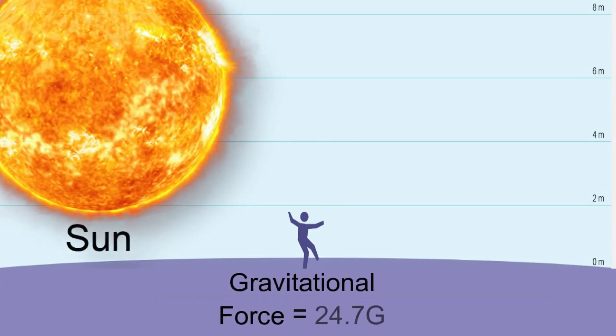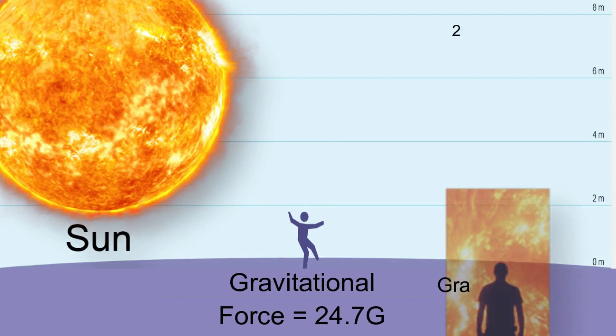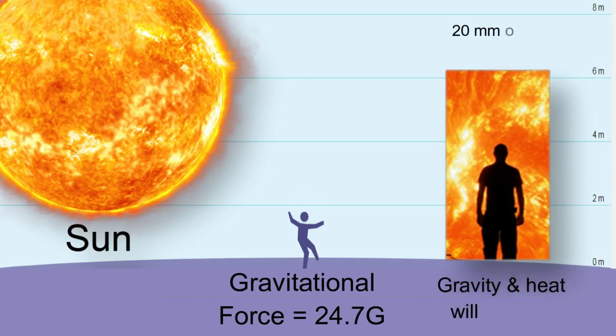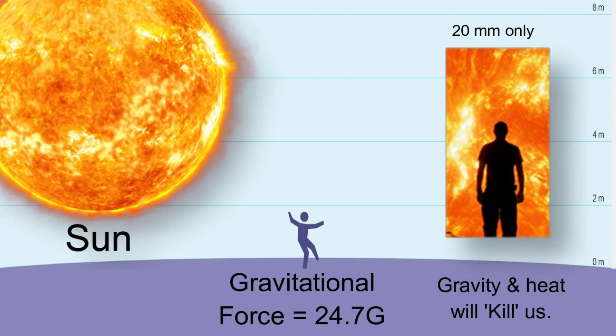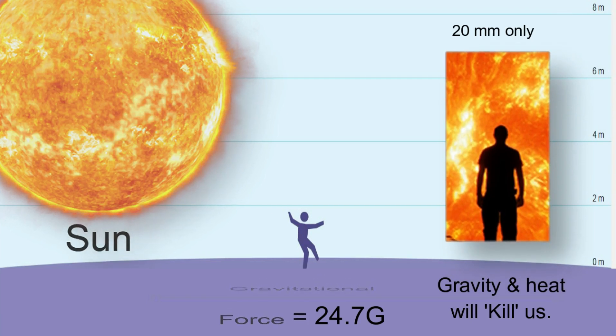The Sun: You can jump only 20 millimeters high if you can survive the normal heat and the gravitational force. For your information, there is no hard surface to stand or walk upon on the Sun.